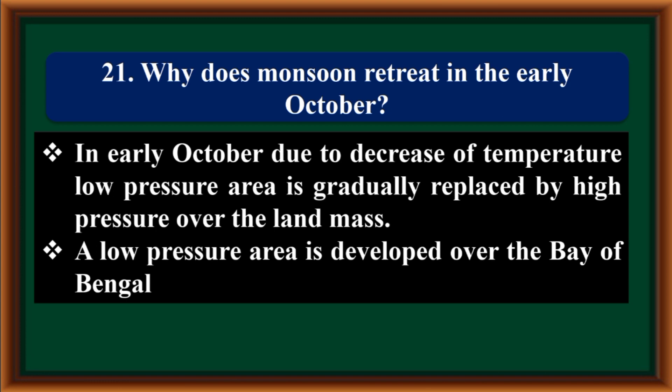Why does monsoon retreat in early October? In early October, due to a decrease in temperature, the low pressure area is gradually replaced by high pressure over the landmass. A low pressure area is developed over the Bay of Bengal.